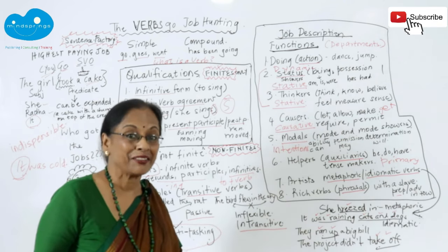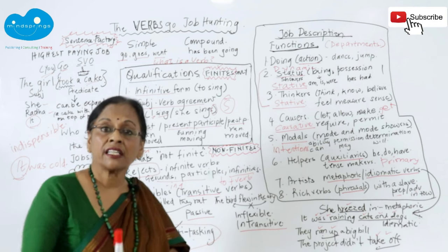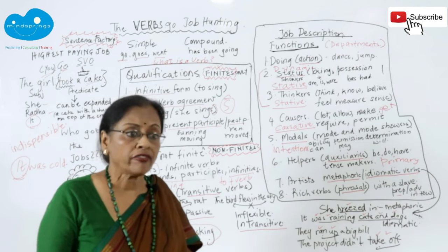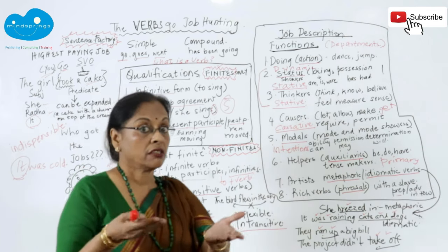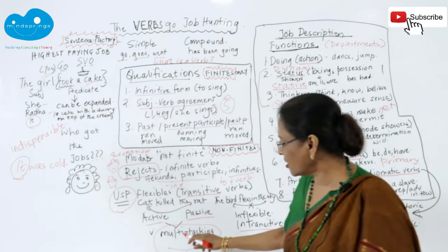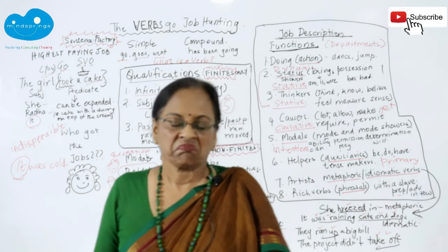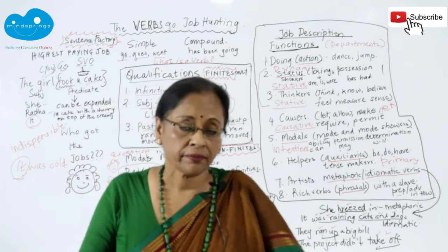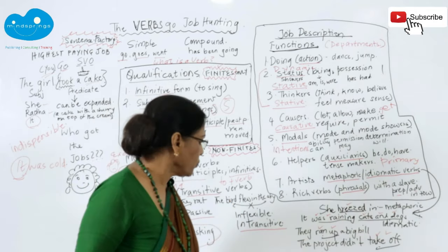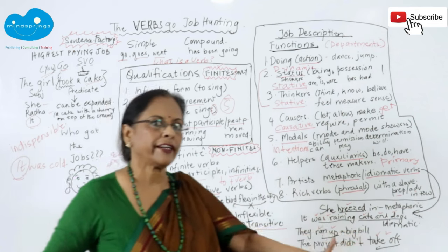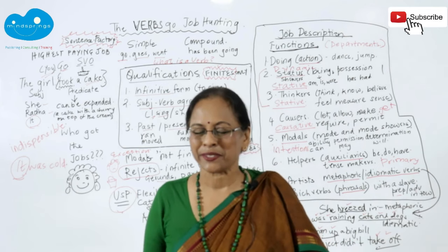Intransitive verbs are inflexible — if placed at one desk, they cannot be moved. Transitive verbs are the multitaskers. They cannot be placed in the same department. 'Don't sulk — we'll give you different rooms and different work.' This is how the sentence factory manned all their departments and rejected those who were not true verbs.